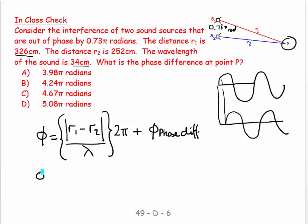This is going to equal 326 minus 252 over 34, and I can do that because they're all in centimeters. Centimeters over centimeters is just a ratio, so I don't actually have to go to SI units. Then multiply by 2π plus I've got to add on to this 0.73π.